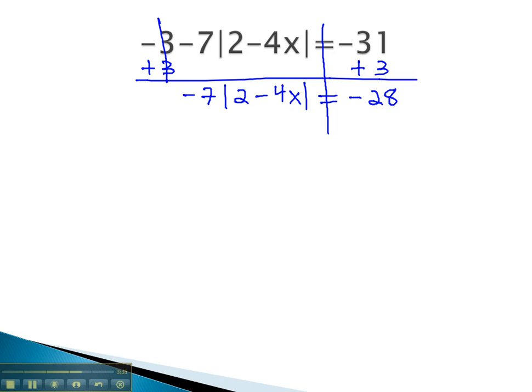Again, we cannot distribute the 7 through the parentheses. We must divide both sides by the negative 7. As we do, we have the absolute value of 2 minus 4x is equal to 4.